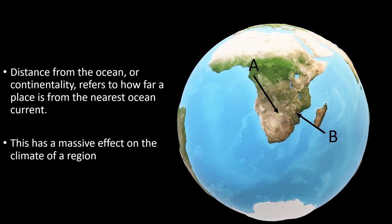This distance has a great effect on the climates of both inland and coastal regions, because of the moderating effects of oceans on coastal temperatures. Place A on this model of the Earth, and of southern Africa in particular, will have a much different climate to place B, because place B is closer to the coast.